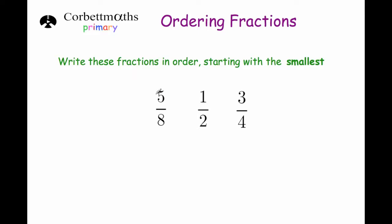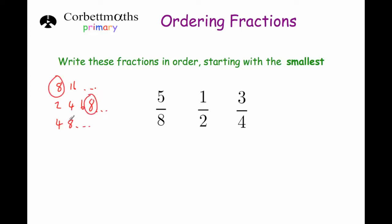So if we've got 5 eighths, 1 half and 3 quarters, we want to get the same number on the bottom of each of those fractions. The logical choice would be eighths. If we look at the bottom numbers — 8, 2 and 4 — the 8 times table goes 8, 16 and so on; the 2 times table goes 2, 4, 6, 8 and so on; and the 4 times table goes 4, 8 and so on. As you can see, 8 is the first number in all of their times tables. It's called the lowest common denominator.